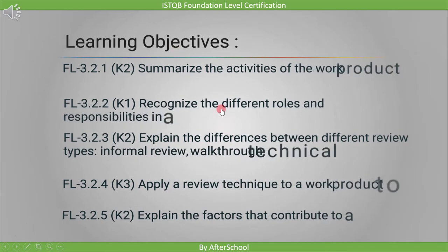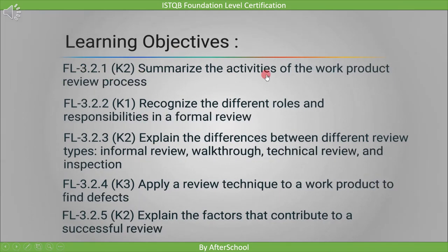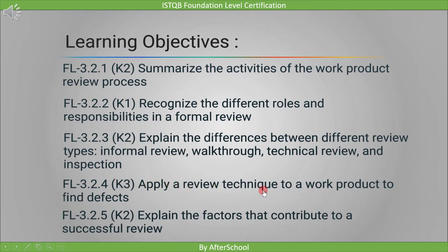These are the different learning objectives of this topic. First: summarize the activities of the work product review process — we will see the different activities of review. Second: recognize the different roles and responsibilities in a formal review. Third: explain the differences between different review types — informal review, walkthrough, technical review, and inspection. Fourth, marked as K3: apply a review technique to a work product to find defects — we will provide a practical example showing how to perform review on a test object. Finally, we will explain the factors that contribute to a successful review.